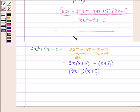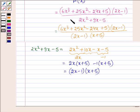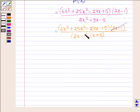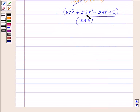So the denominator on factorizing gives (2x - 1)(x + 5), and in the numerator we have (6x³ + 25x² - 24x + 5)(2x - 1). Now 2x - 1 is the common factor. So we have (6x³ + 25x² - 24x + 5) divided by (x + 5), which equals (x + 5)(6x² - 5x + 1) divided by (x + 5).